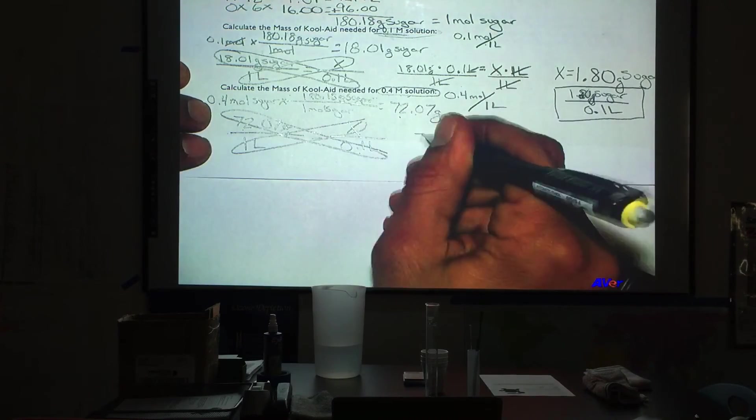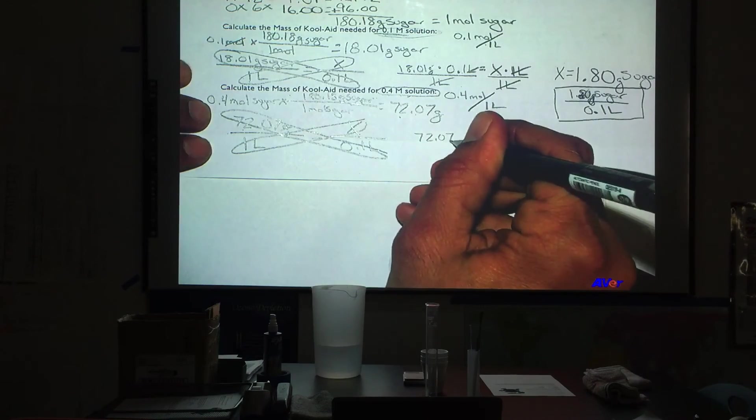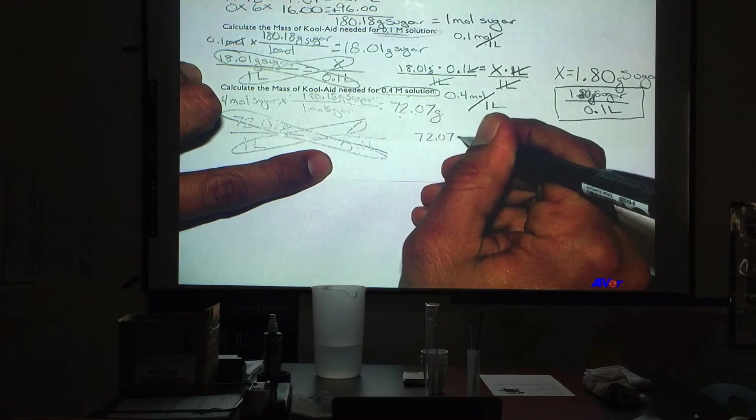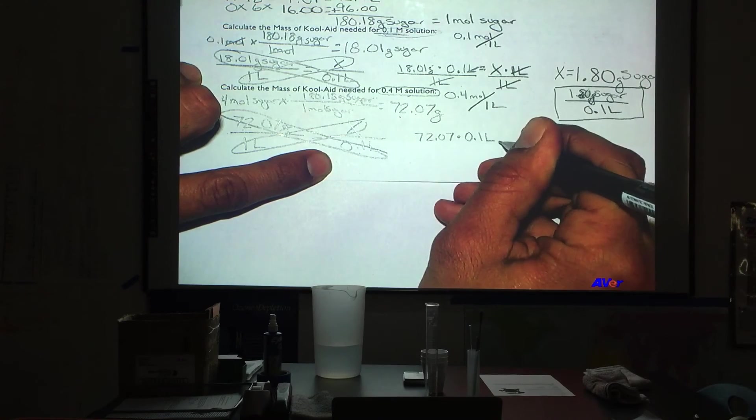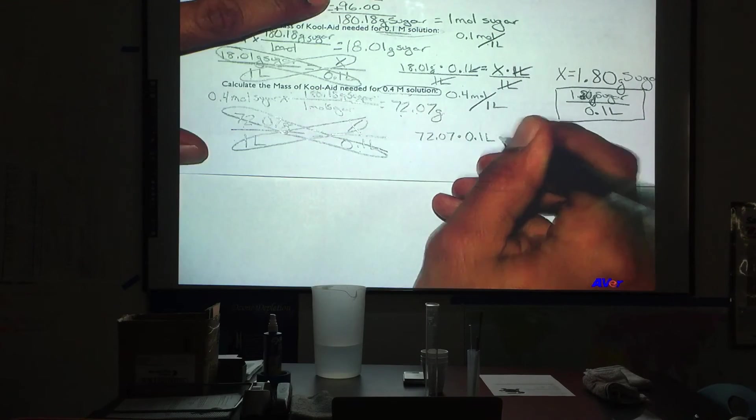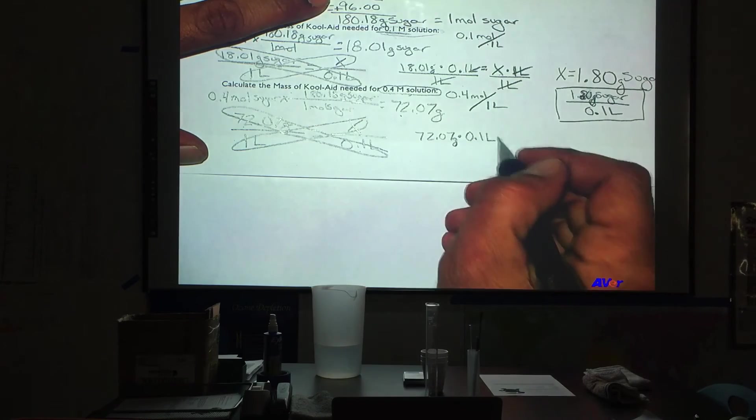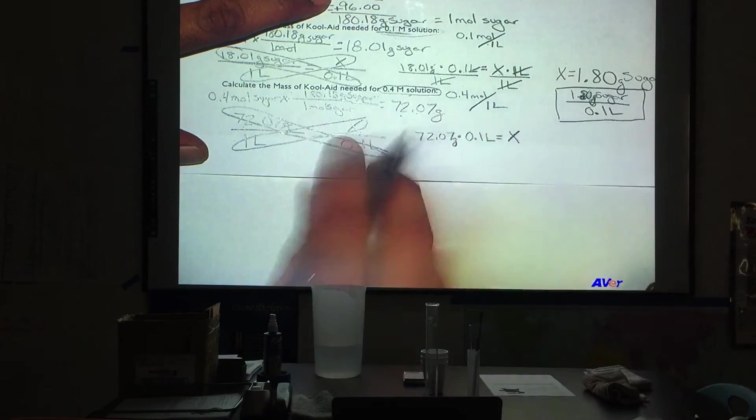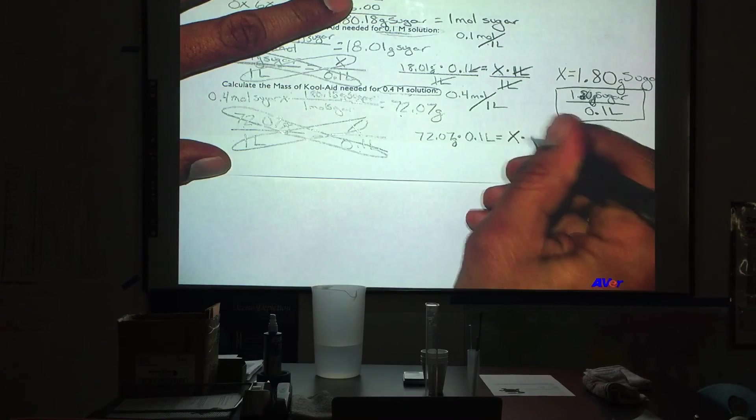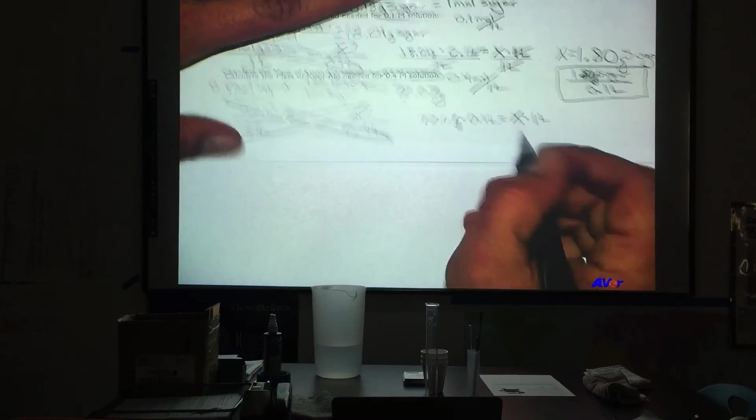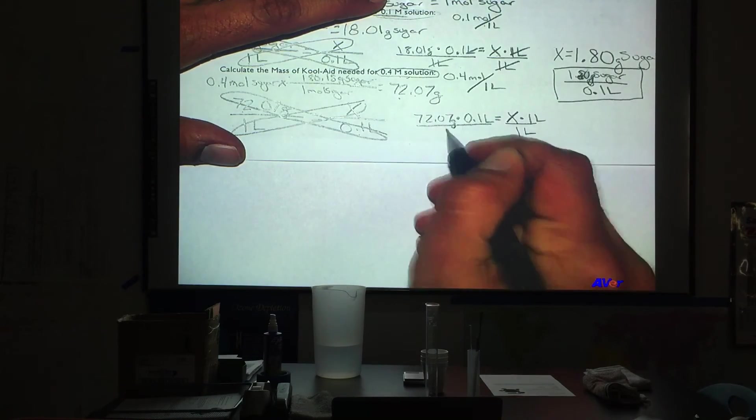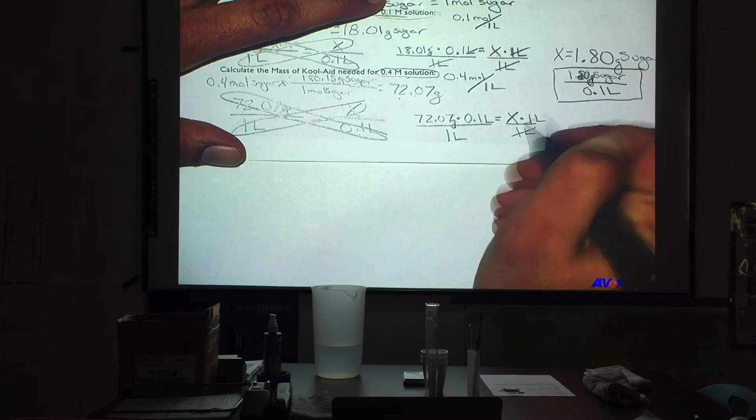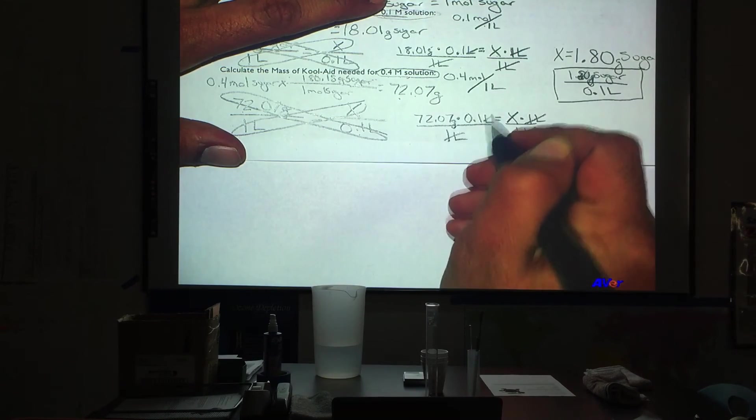And we will go 72.07 times 0.1 liters. And we are going to say the grams here is equal to X times 1 liter. So again, we are going to divide one liter from both sides. This is going to get rid of liters.